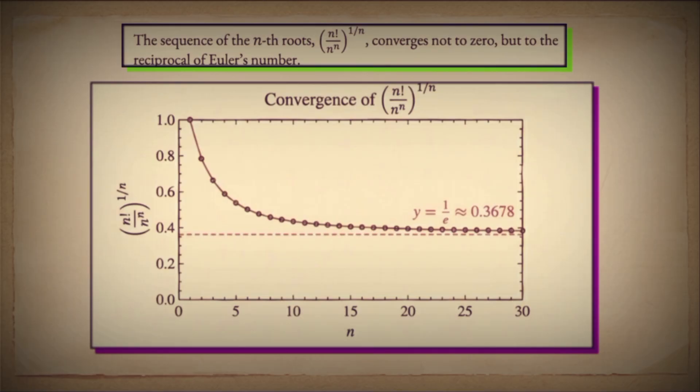This is the elegance: the sequence itself goes to 0, but its geometric mean — its nth root — converges to the reciprocal of Euler's number, 1/e. A number intimately connected to growth, logarithms, and now factorials and powers. We didn't just verify a limit. We built a bridge from discrete mathematics to integral calculus using the tools of analysis, algebra, and a bit of clever insight. That's the journey Euler laid out, and that's real, rigorous mathematics.